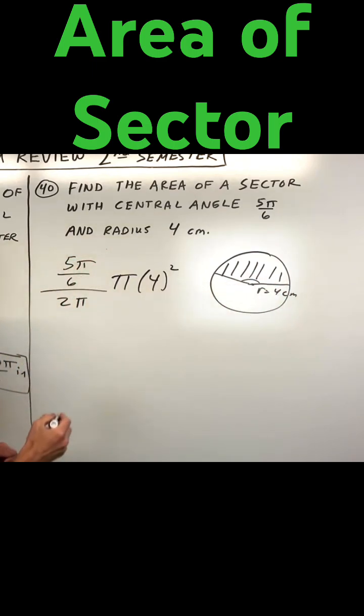So now we can simplify a little bit. You can see the pi in the numerator, pi in the denominator, those are going to cancel.